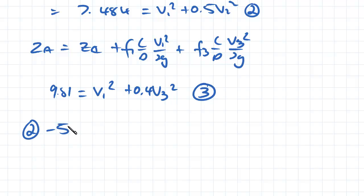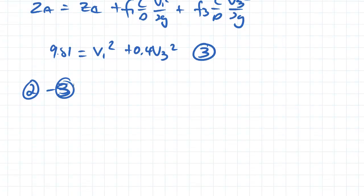The first thing we're going to do is equation 2 minus 3. So that's going to give us -2.326 = 0.5v2² - 0.4v3². That's just minus that v1² for us there.